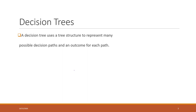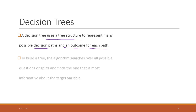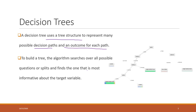A decision tree follows a similar procedure. A decision tree uses a tree structure to represent many possible decision paths and an outcome for each path — either for regression or classification. It asks all possible questions, splits the paths based on answers, and hopefully reaches the final answer.